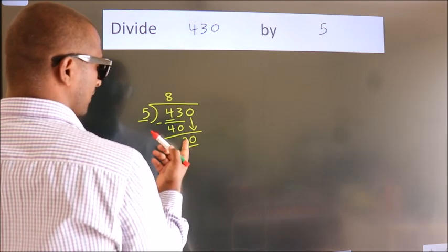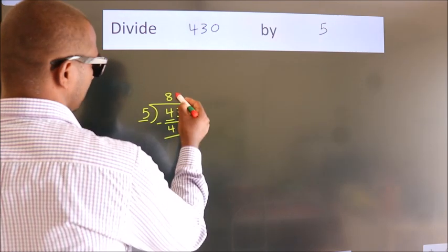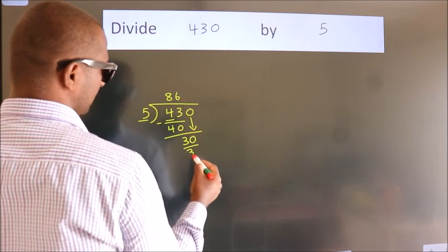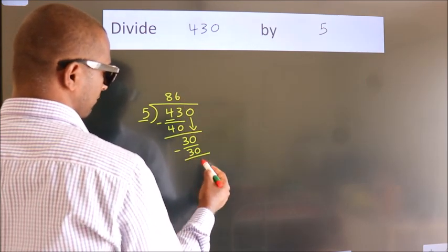So, 30. When do we get 30? In 5 table, 5 times 6, 30. Now, we subtract. We get 0.